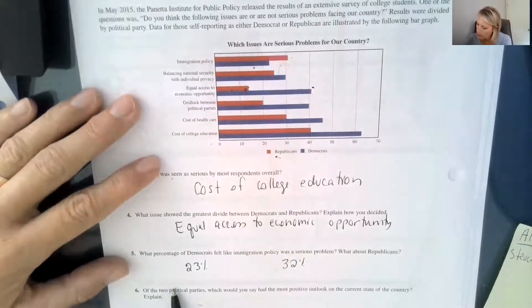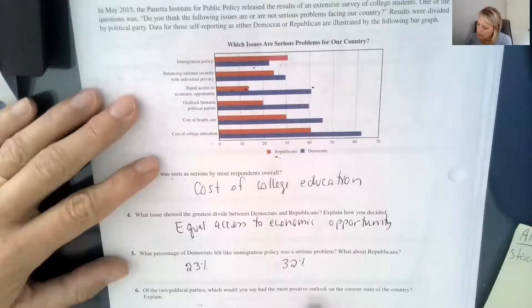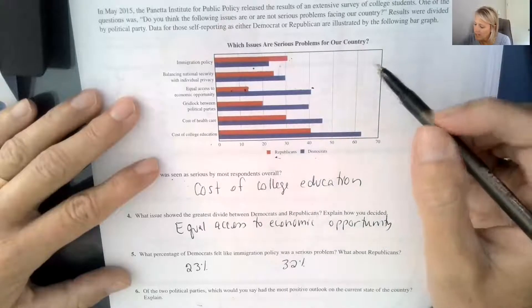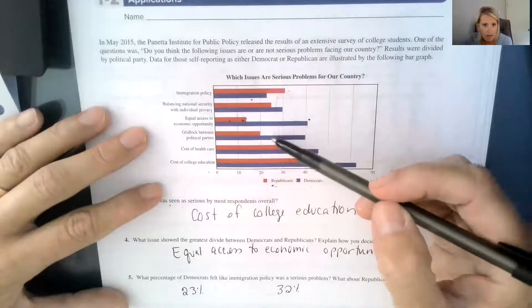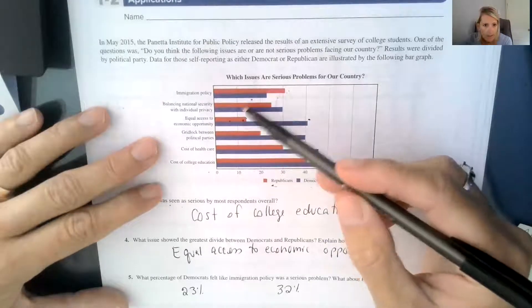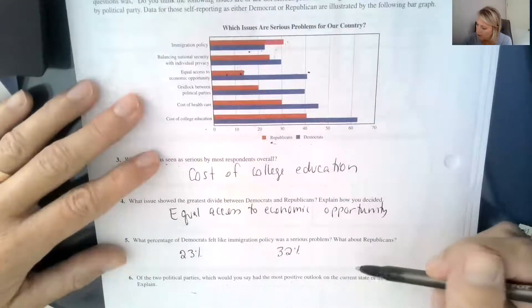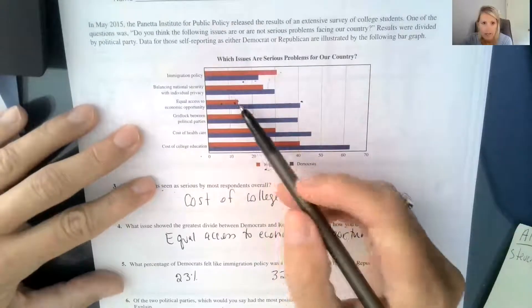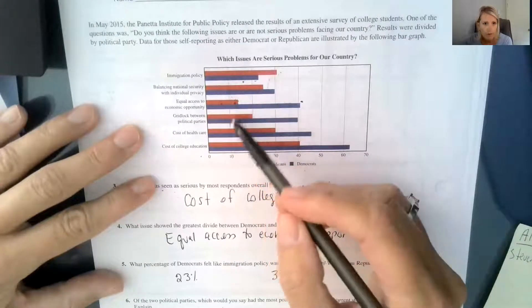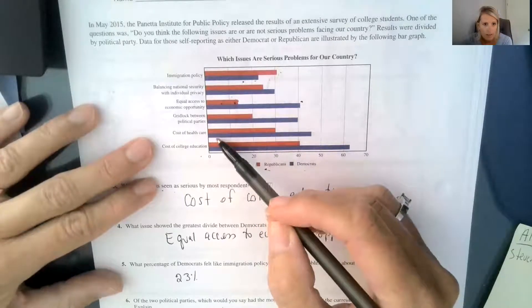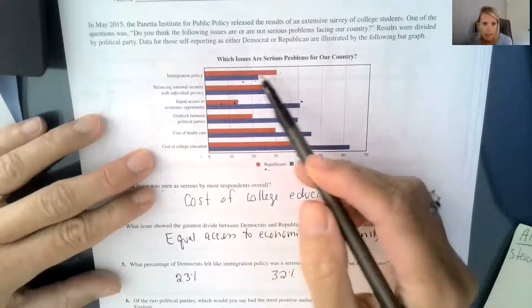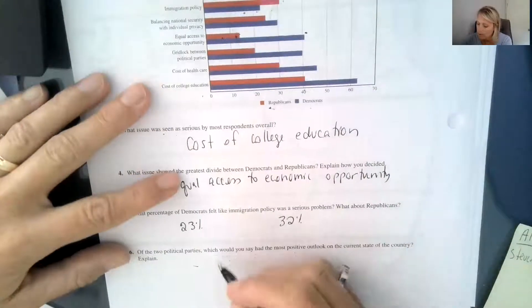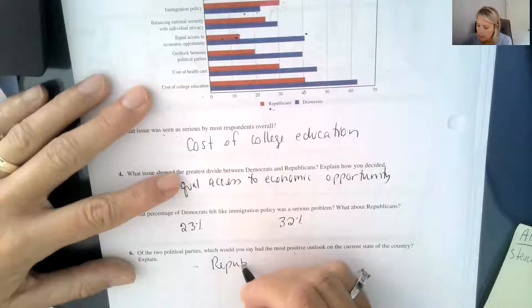It says of the two political parties, which would you say have the most positive outlook on the current state of the country. And I would definitely say, which issues are serious problems. It looks to me like the Republicans have the most positive outlook because they're not as concerned about the gridlock between the parties. They're not quite as concerned about the cost of health care. Not quite as concerned about the cost of education, they're concerned about immigration. So I would say they're Republicans, but I could see where depending on what you're looking at you would choose one or the other so there's no right or wrong answer for number six.